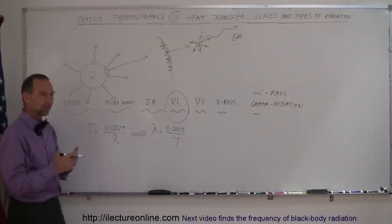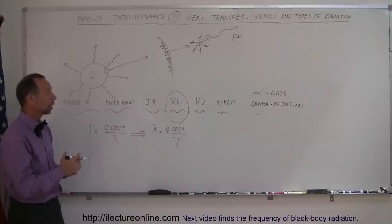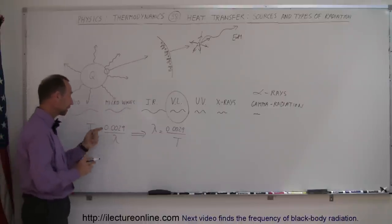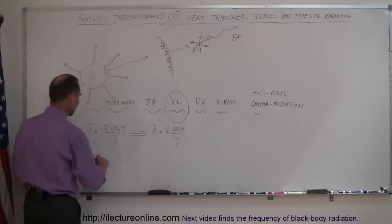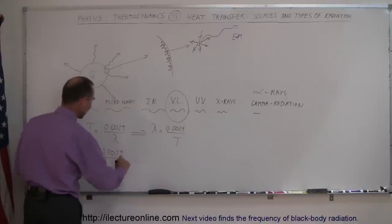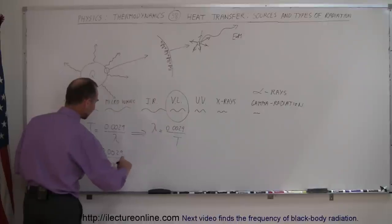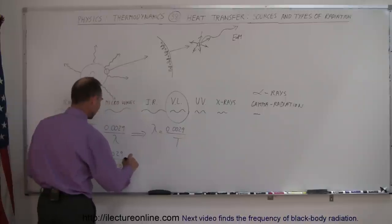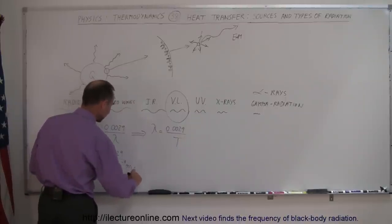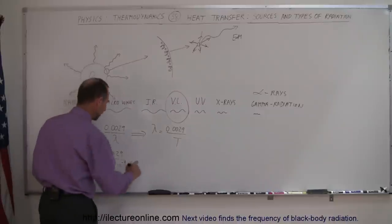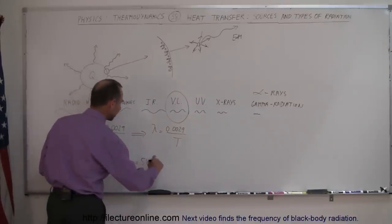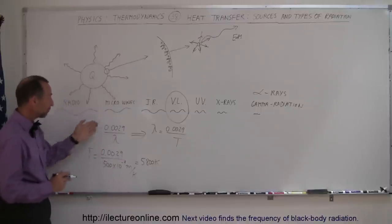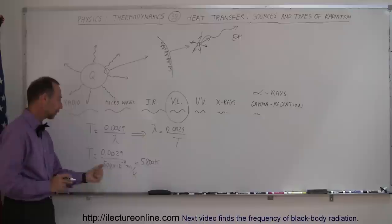For example, the sun radiates visible light primarily in the yellow color, and the wavelength of yellow light is around 500 nanometers. Plugging into Wien's Law: temperature equals 0.0029 divided by 500 × 10⁻⁹ meters. The units are meters per Kelvin, giving a result of 5800 Kelvin. So we can figure out the temperature of the sun simply by knowing the wavelength of the light it emits.